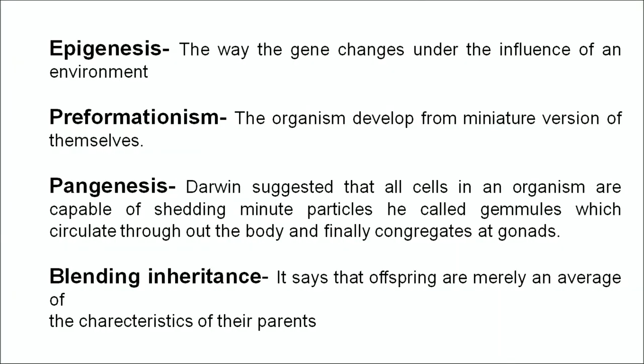Epigenesis describes how genes change under the influence of environment. Identical twins have the same genetic makeup but we can still find differences in them. Preformationism says that organisms develop from miniature versions of themselves. According to pangenesis, Darwin suggested that all cells shed minute particles called gemules which circulate throughout the body and congregate at the gonads. Blending inheritance says offspring are merely an average of their parents' characteristics. None of these theories hold true today.